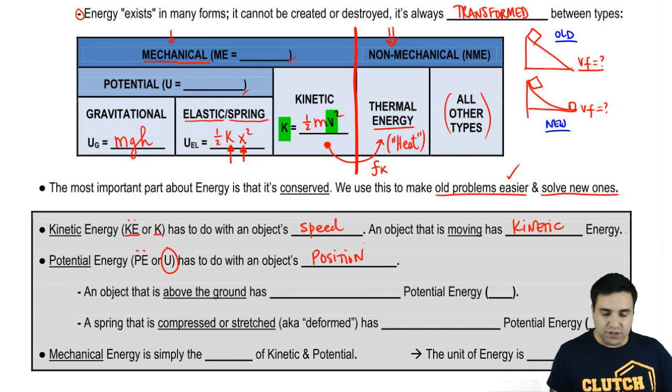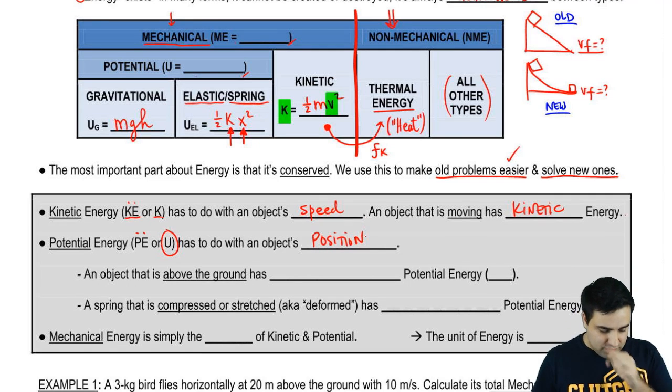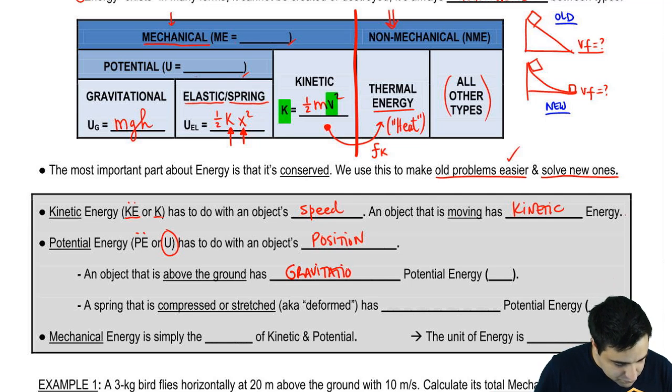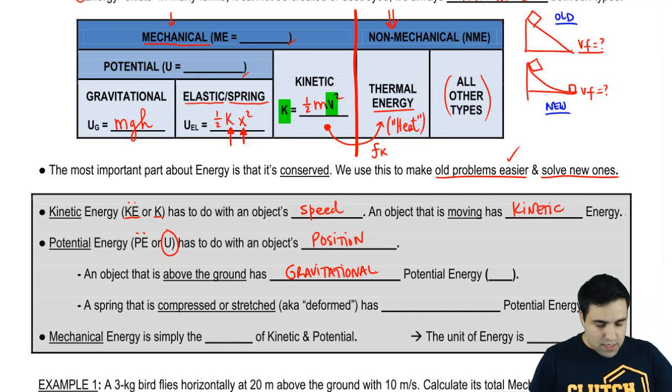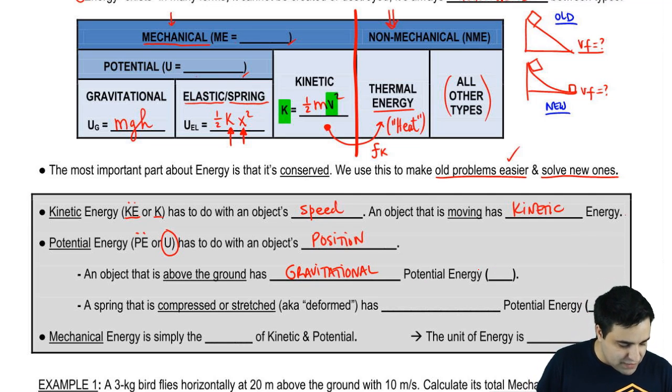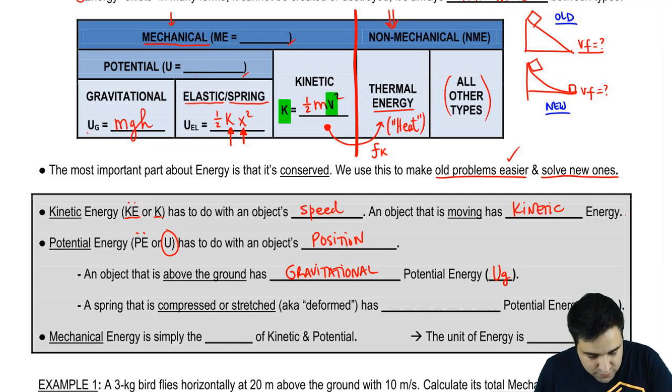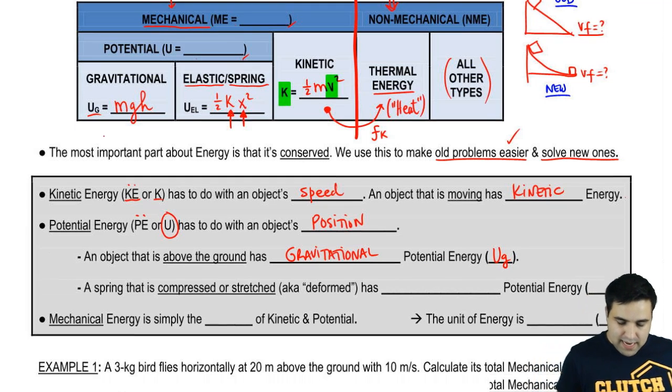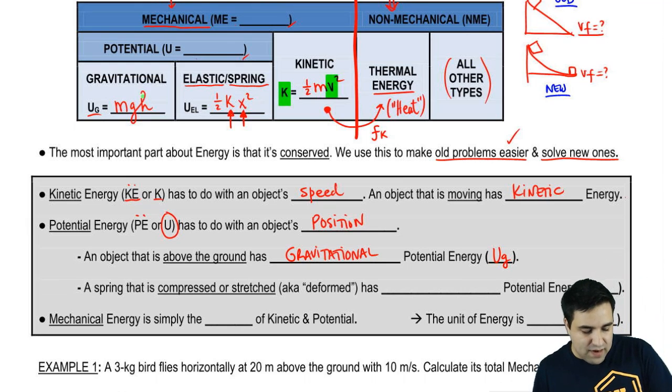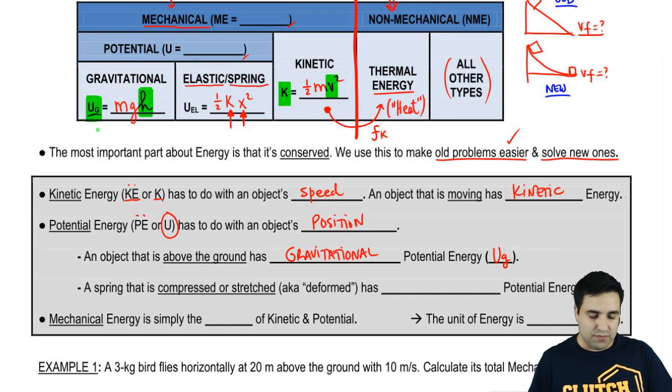Now, there's two types of potential energy, gravitational elastic. An object that is above the ground has gravitational potential energy. Since there are two types of potential energy, we use a subscript to differentiate between them. So potential energy is U, but if it's of the type gravitational, it's U sub G, right here. And you can see this here. If you're above the ground, you have a height. And if you have a height, your potential energy is zero. I'm sorry, not zero. But if you don't have a height, if you're on the floor, then H would be zero, and the potential energy will be zero.